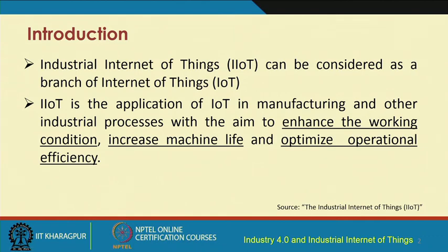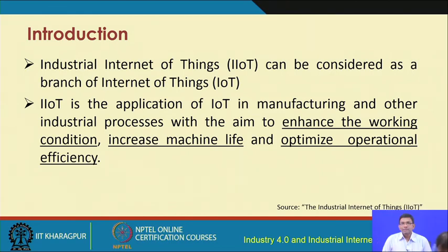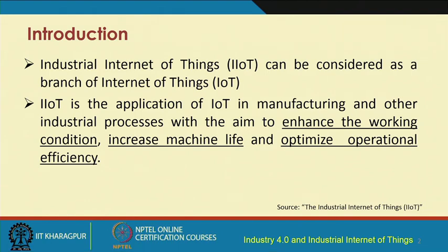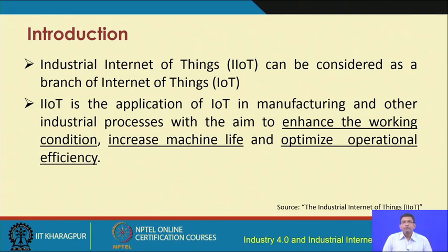Now let us go back and look at the details of Industrial IoT. Industrial IoT is about the use of Internet of Things for serving different industrial applications — such as manufacturing, agriculture, healthcare, and so on. The overall idea is to use IIoT for increasing or enhancing working conditions in industries, such as the safety of workers, ergonomic conditions, increasing machine life, optimizing operational efficiency, and many others.